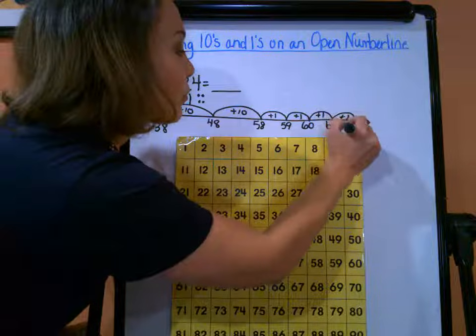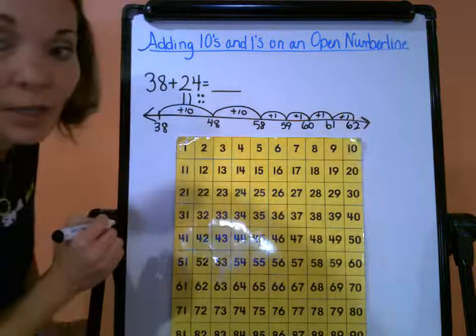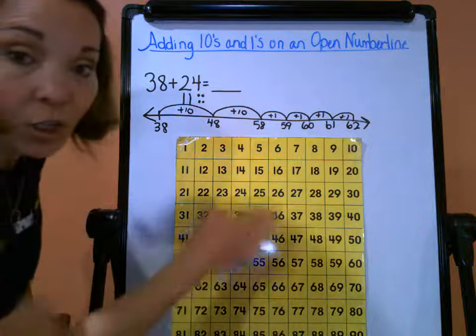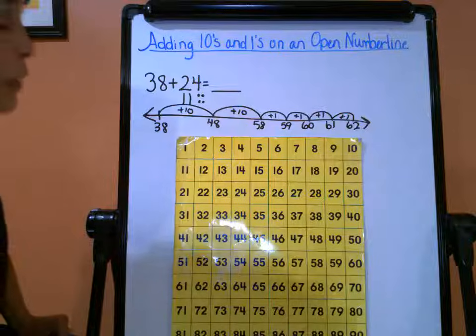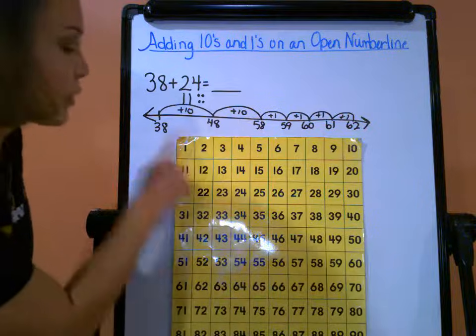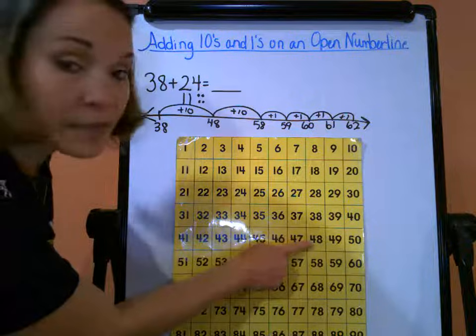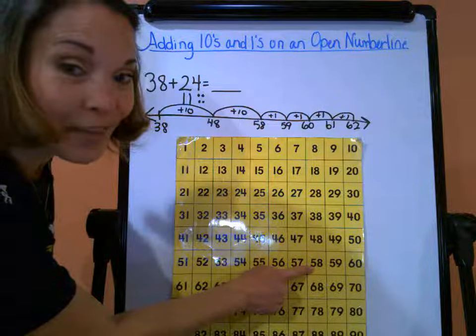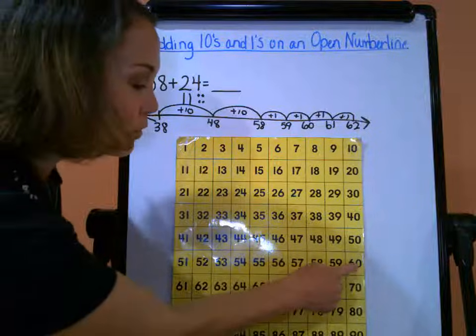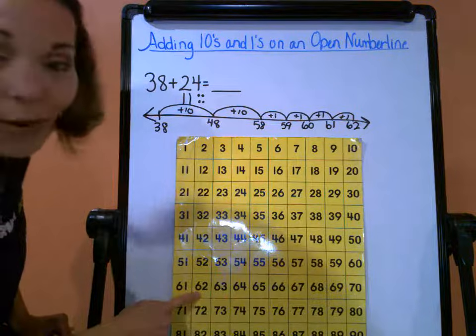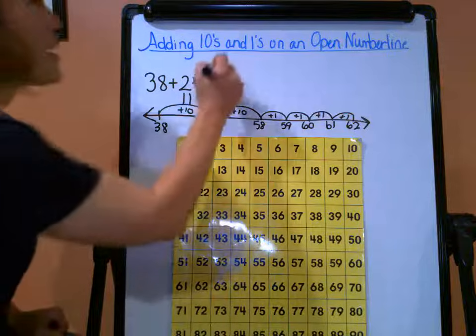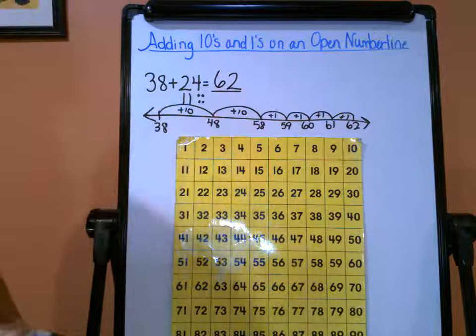Here we go, so I'm going to start at 38: one ten, two tens, and then my four ones—one, two, three, four—and we did end on 62. So my sum here, 38 plus 24, is going to be 62. So hold tight, we have one more example.